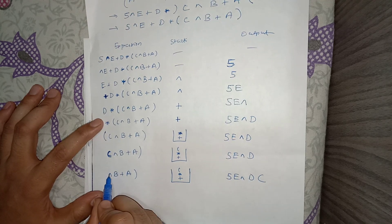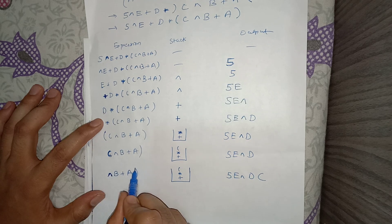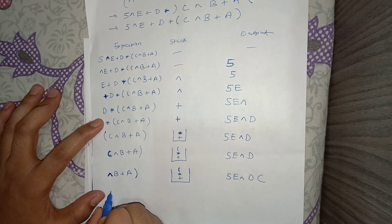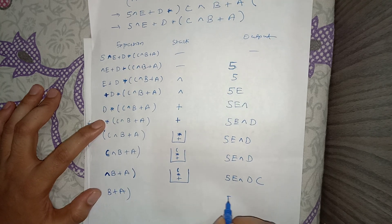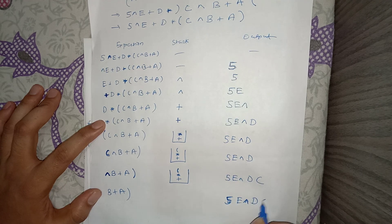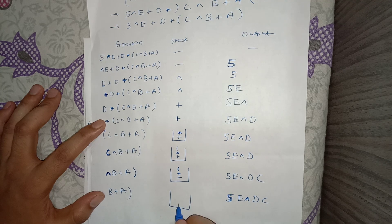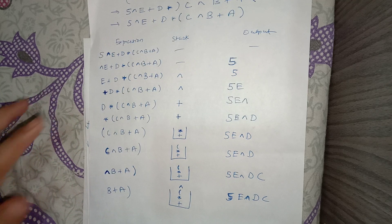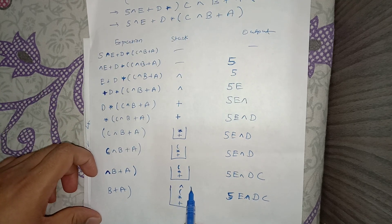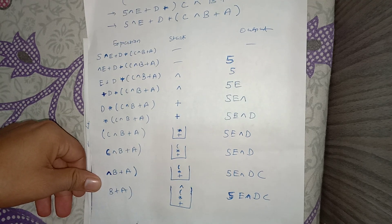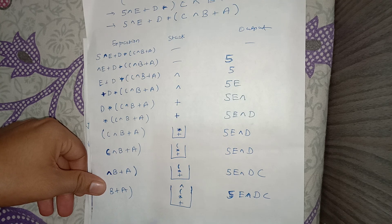The next token is multiplication. We want to push it onto the stack and check whether it has higher precedence than the top element, which is the opening bracket. Since multiplication has higher precedence than the opening bracket, it goes on top. Stack is now: plus, multiplication, opening bracket, multiplication.